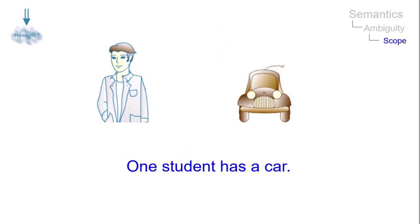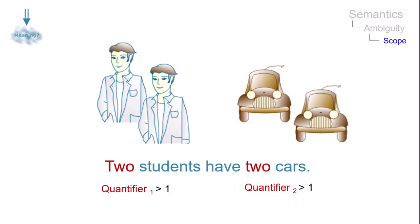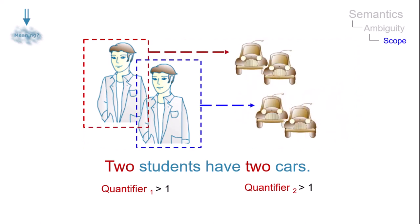Here is an unambiguous example with two quantifiers not larger than one. With two quantifiers larger than one, however, the meaning is no longer clear. Do both students have a total of two cars? Or does each student own two cars?